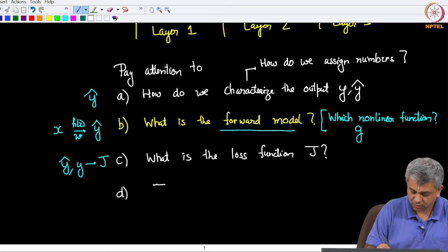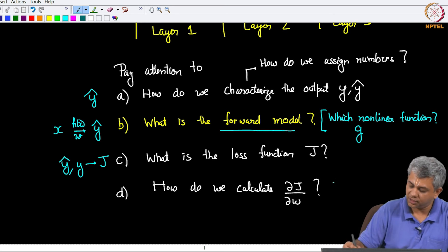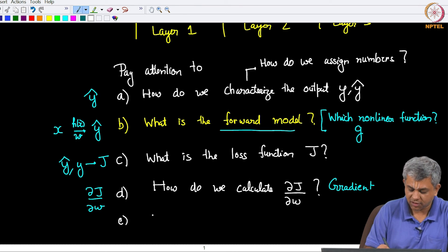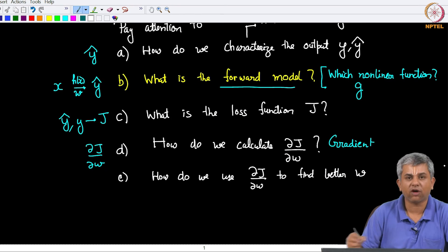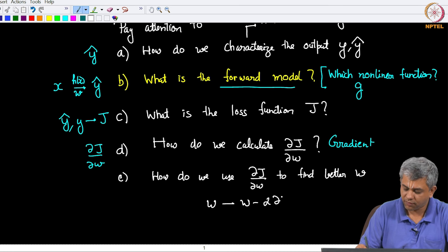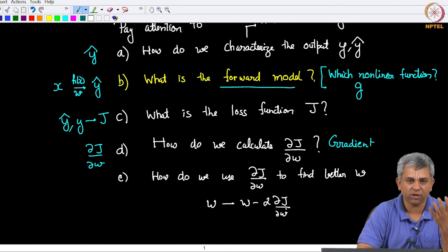Fourth, what you have to find out is how do we calculate del j del w? In other words this is the gradient problem. There is a fifth problem which we will not be discussing very much, which is how do we use del j del w to find better w? As of now more or less what I am assuming is we will simply use some form of gradient descent. And as Dr. Ganapathy had told you last week, you can actually use several variants of this. Typically pure gradient descent is almost always never used in practice. You use some option or the other which is a slightly modified version of gradient descent.